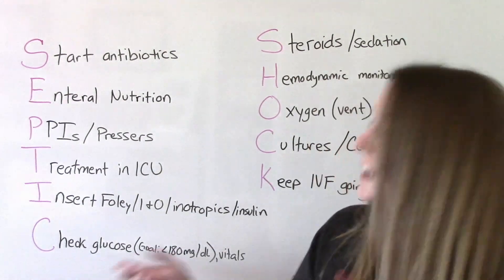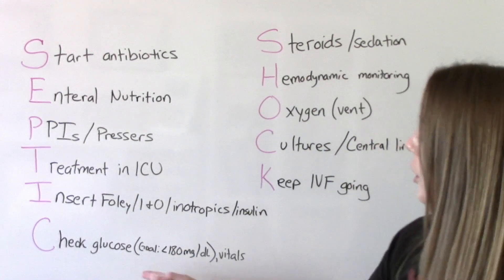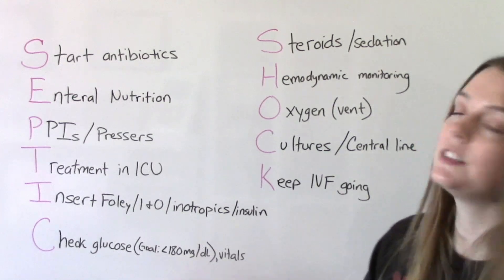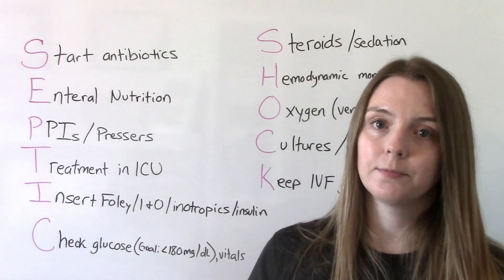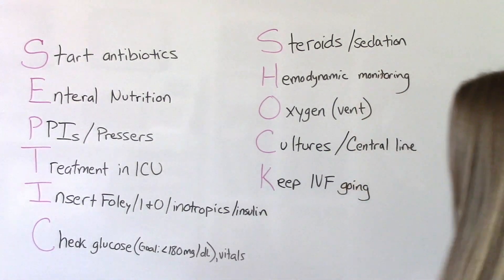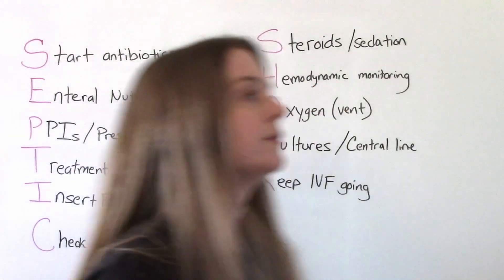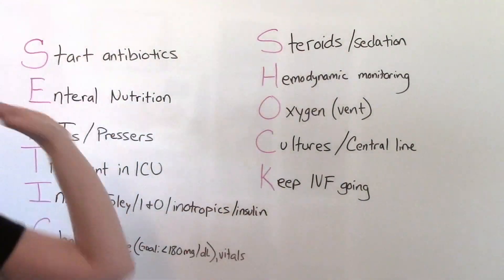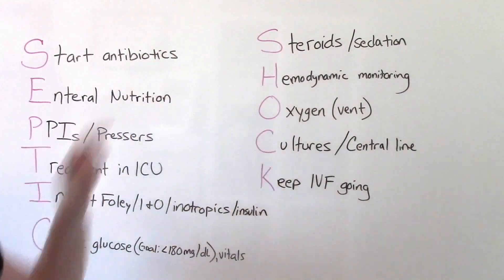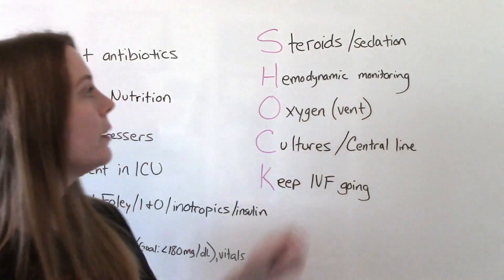C is for checking blood sugars — our goal in septic shock is to get the blood sugar less than 180. And of course, checking vitals frequently. In the second part of the mnemonic — SHOCK — S is for steroids, which in some cases can help.